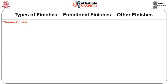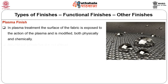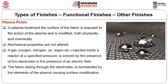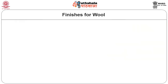Plasma finish: in plasma treatment, the surface of the fabric is exposed to the action of plasma and is modified both physically and chemically, while mechanical properties are not altered. A gas such as oxygen, nitrogen, air or argon is injected inside the reactor at a specified pressure. It is ionized by two electrodes in the presence of an electric field; the fabric sliding through the electrodes is bombarded by plasma elements, causing surface modification.